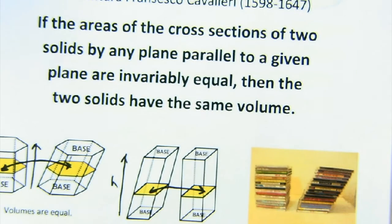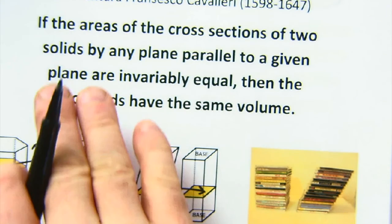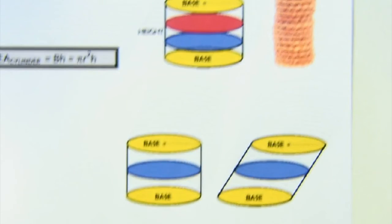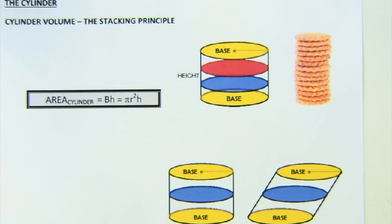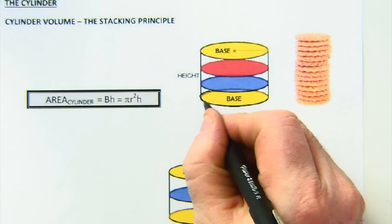I guess that makes sense, doesn't it? If you take your CD case and just push it and you get kind of a diagonal like that, you can still see all those shapes still there getting stacked and placed upon each other.